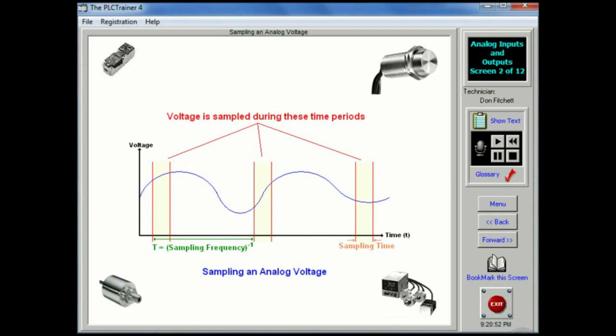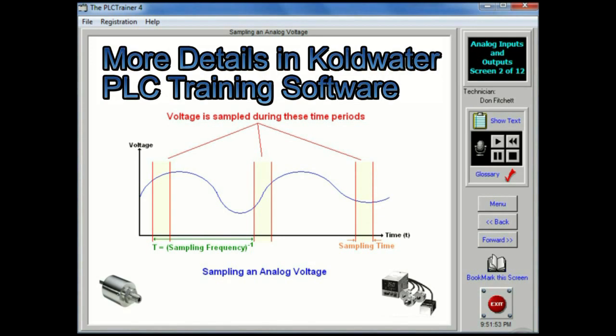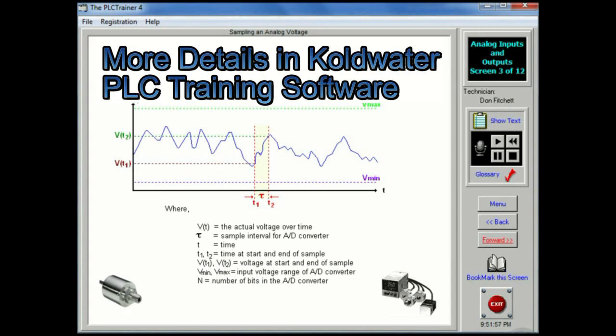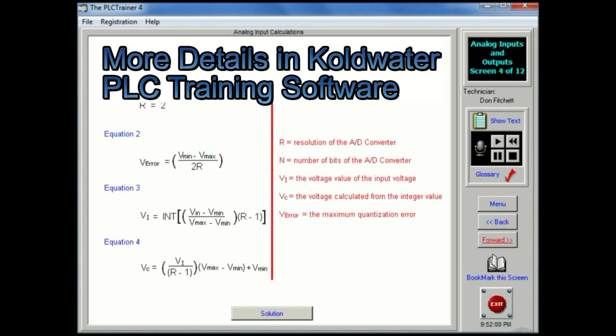AD converters can only acquire a limited number of samples per second. The time between samples is called the sampling period T, and the inverse of the sampling period is the sampling frequency, also called the sampling rate. The sampling time is more often much smaller than the sampling period. The sampling frequency is specified when buying hardware, but for a typical PLC, a maximum sampling rate might be 20 hertz.